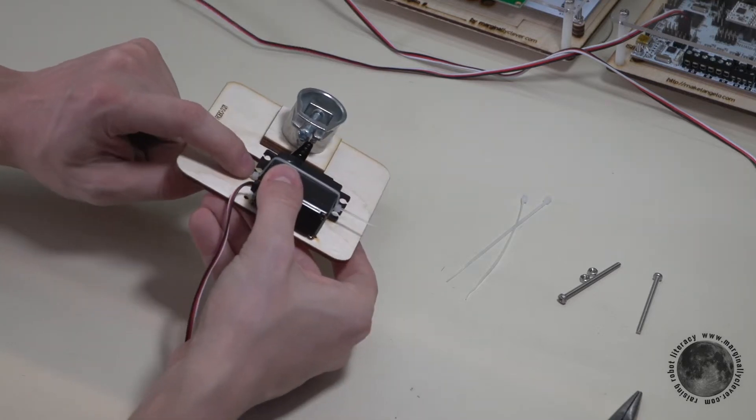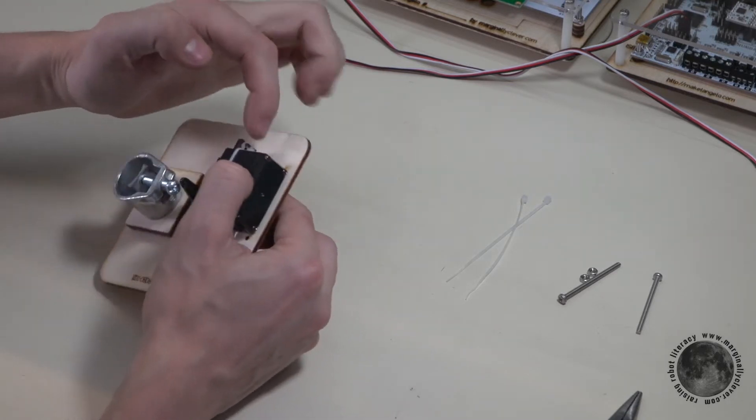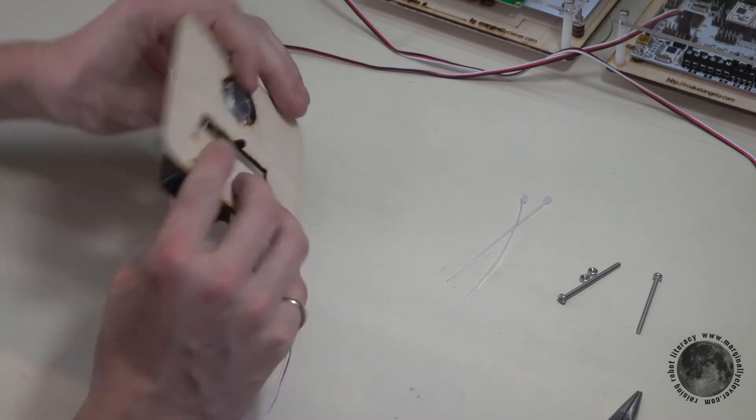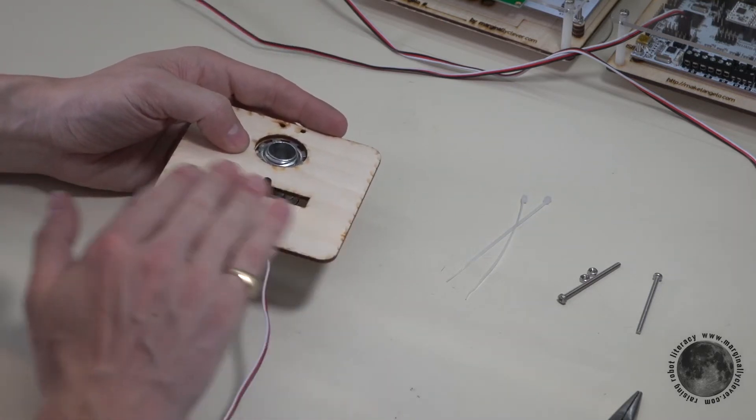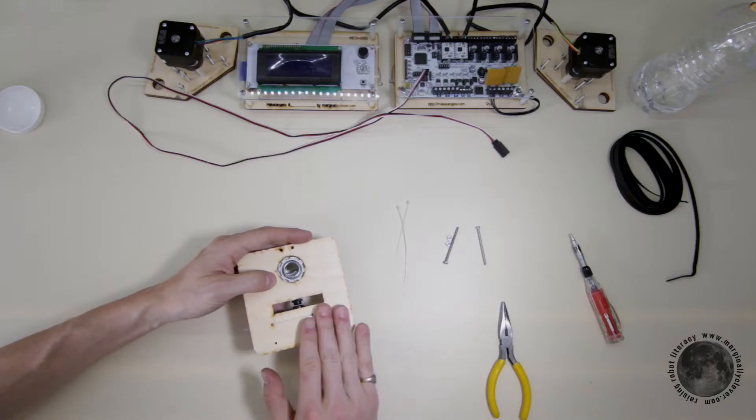Notice that both ends of the zip tie, the fat ends of the zip tie are on this side of the wood. We want as little as possible interfering on this side.